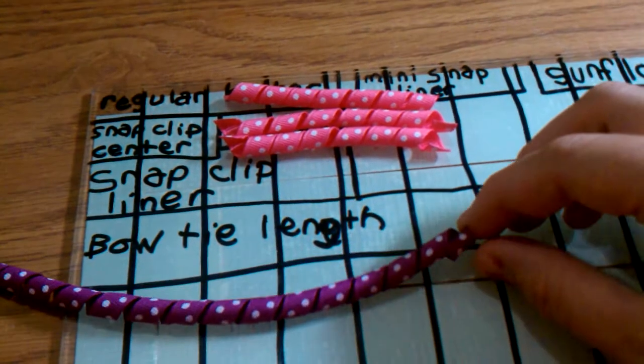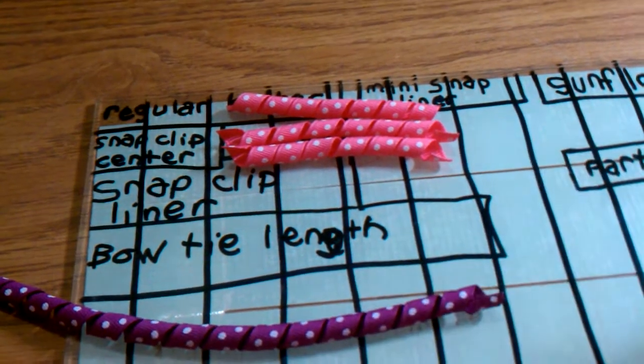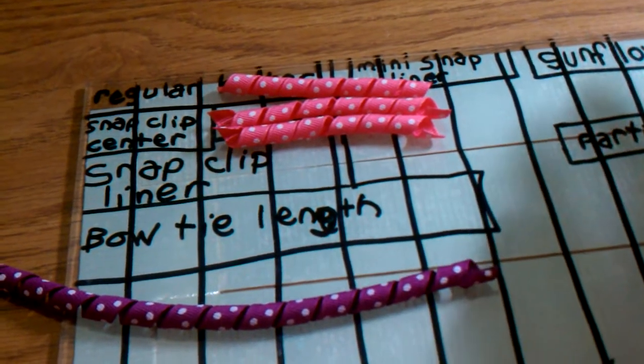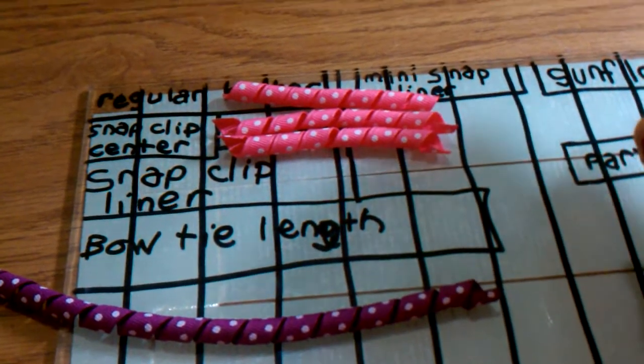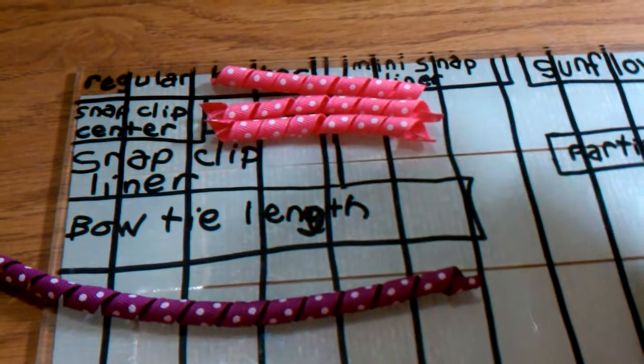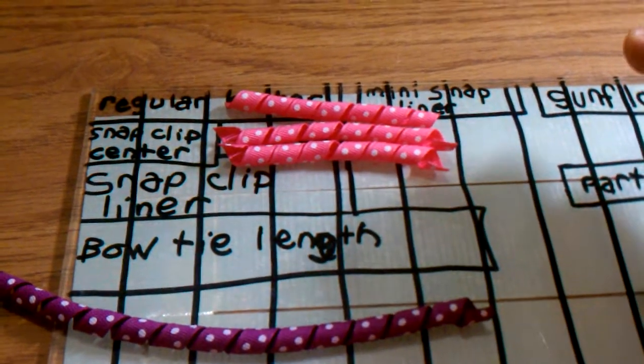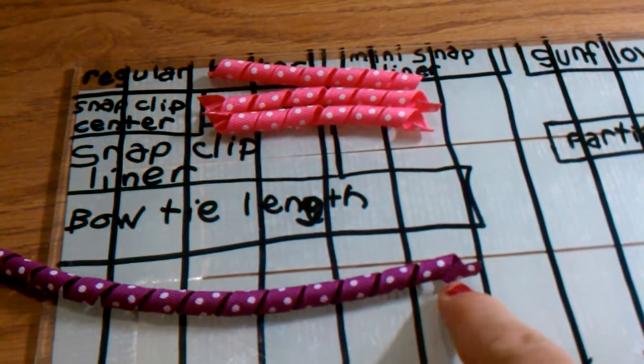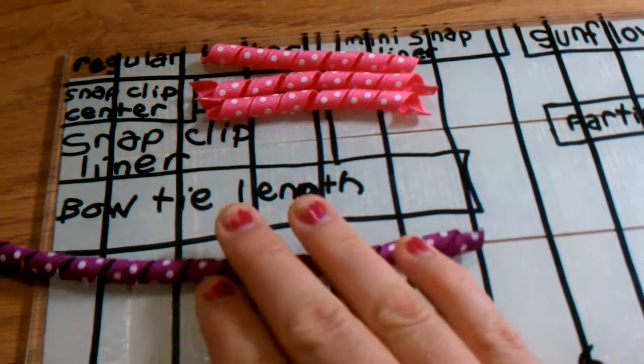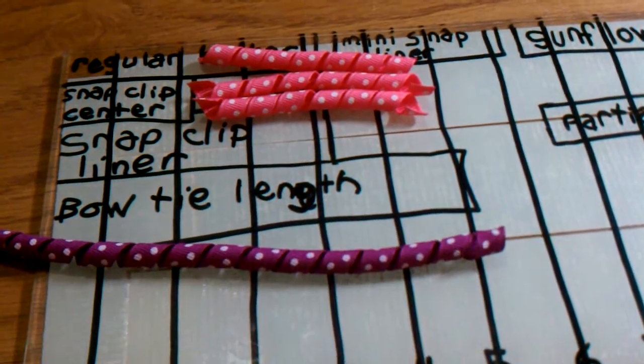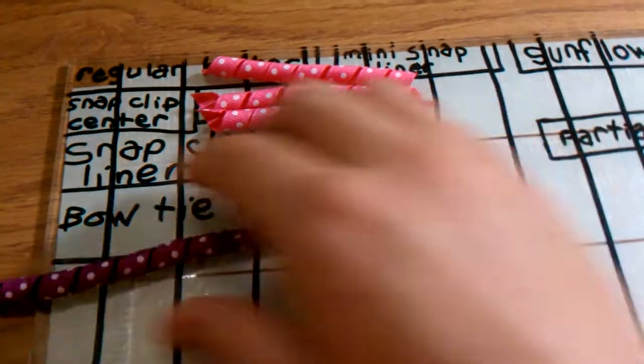When I am measuring out my corker ribbon, if you want to make a three and a half inch corker, you cut three inch strips. If you want to make a four inch corker, you cut three and a half inch strips.